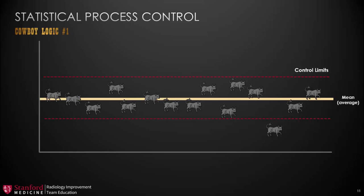Remember in logic number one, the cowboy learned to respond only when something fell outside of the boundaries. In statistical process control, it's the same thing — you set control limits, and when a point does fall outside the boundaries, you ask: why did this happen and what can we learn from it? Many solutions are brought forth in a project by looking at those points that fall outside of the control limits. You can learn a lot from them.